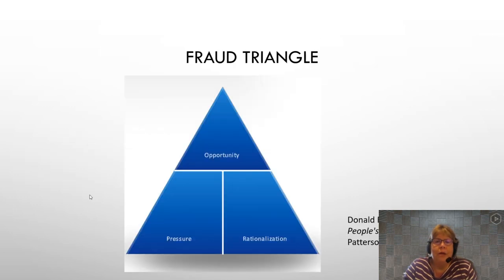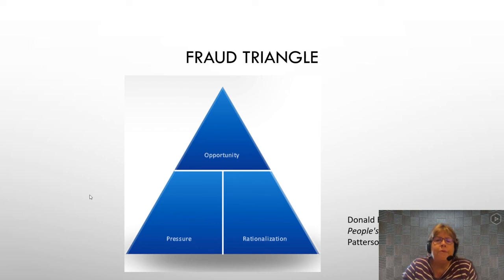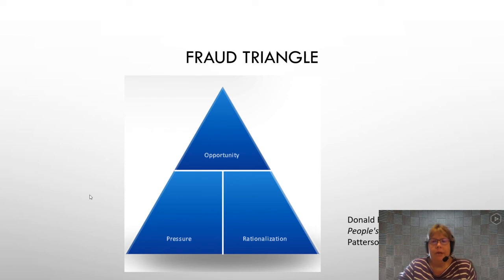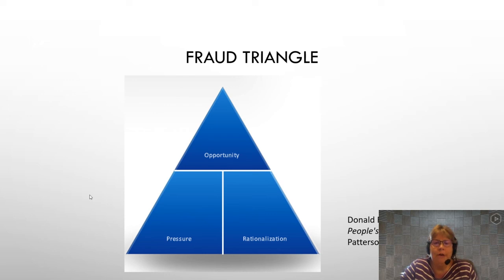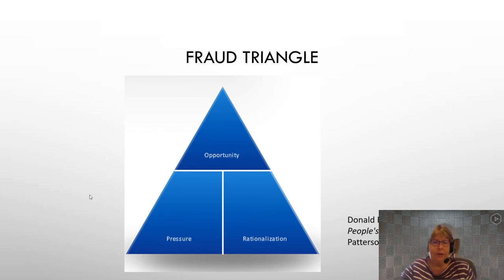This diagram shows the fraud triangle. There are really three components: opportunity, pressure, and rationalization. This is something we focused on in the early research — there are three things that most fraudsters exhibited before committing a fraud. First, at the top, they had opportunity — some type of ability to be able to commit the fraud. In most cases this is due to a lack of internal controls, lack of good supervision, or just finding some way that the door opens for them to commit the fraud.